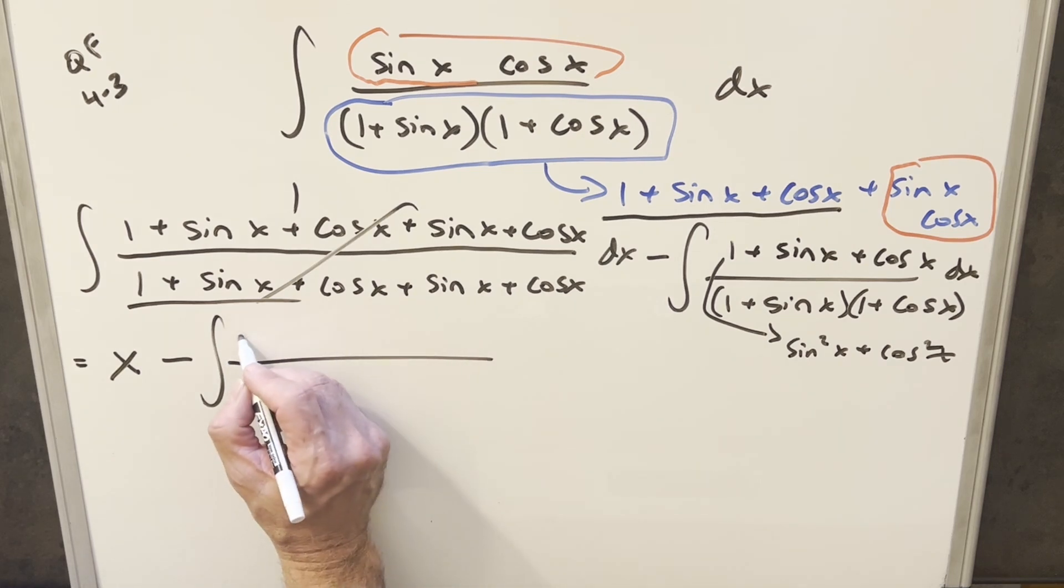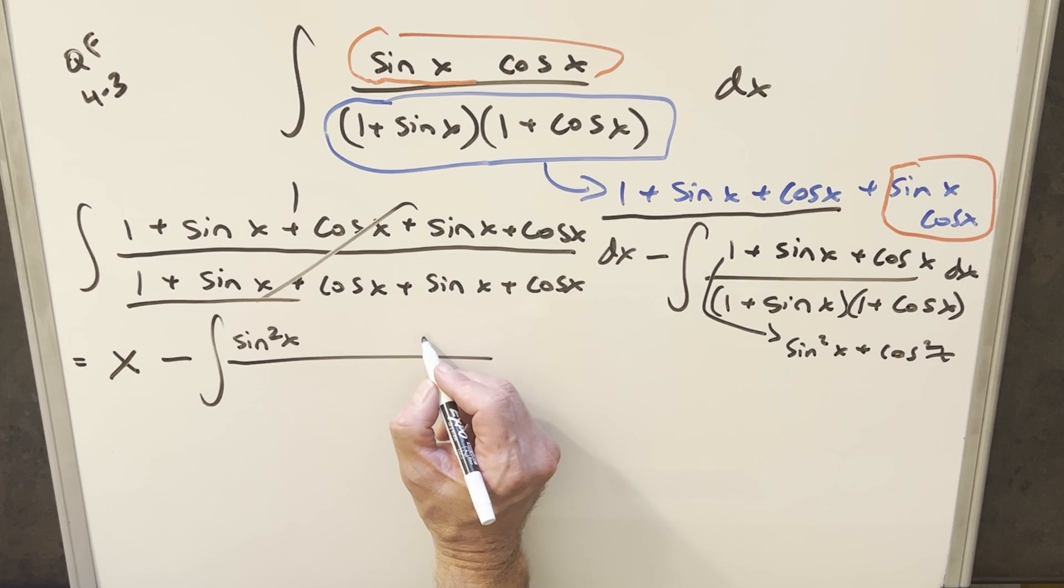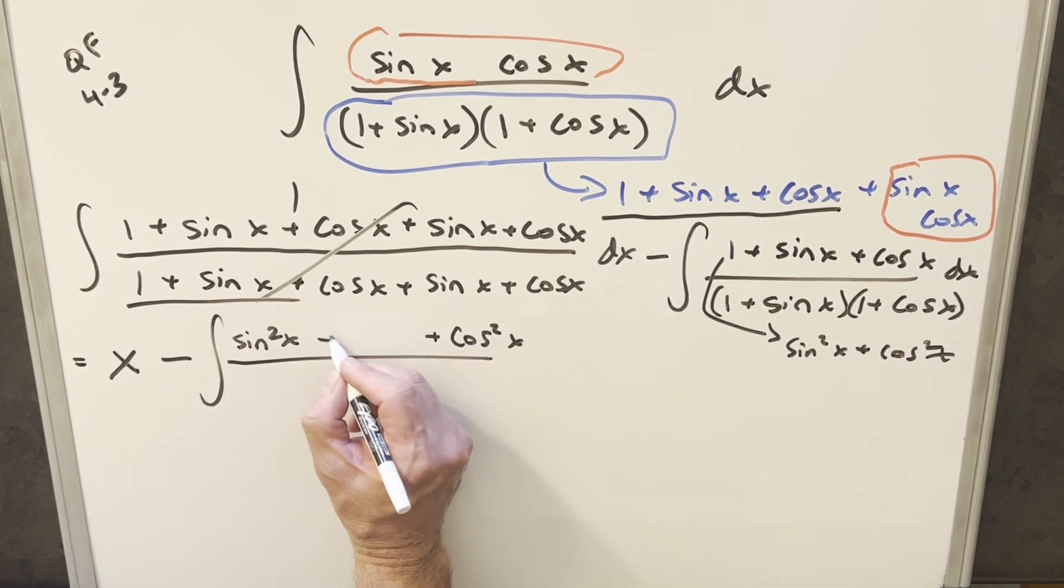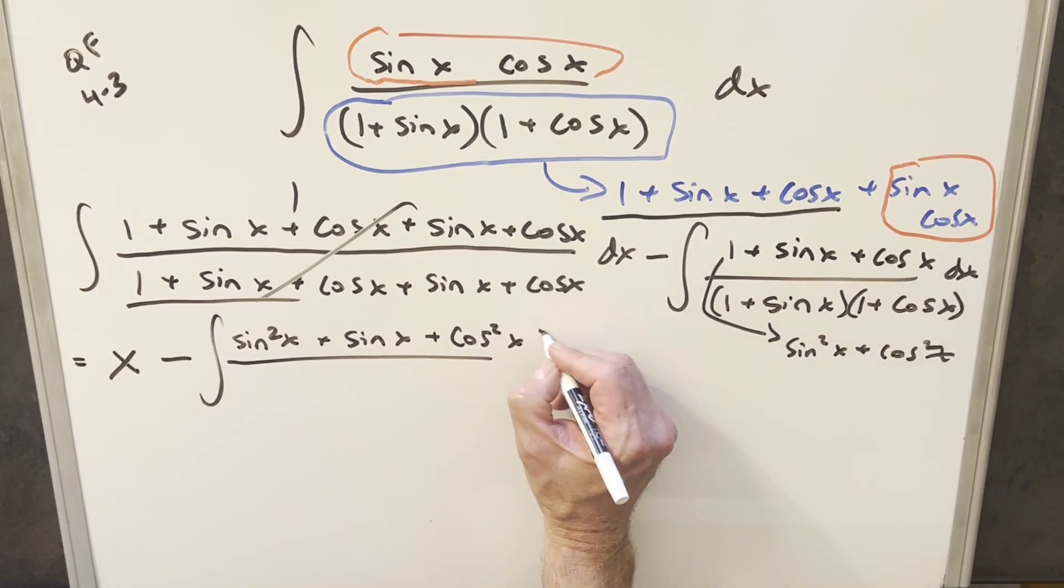So when I do that, for that 1, we'll have sine squared x. I'm going to go out of order and create this cosine squared x over here. And then we have this sine x right here. And then we have that cosine x at the end.